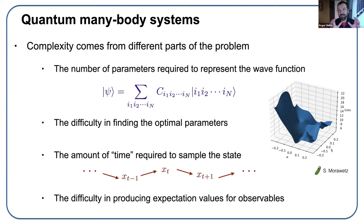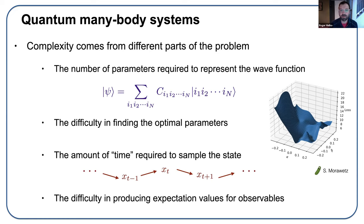As you look at different methods, the complexity manifests in different ways — different parts of the problem give you the exponential wall. If we're lucky, we'll find Hamiltonians or wave functions that can be classified in a way that allows us to devise algorithms bypassing this exponential difficulty, like one-dimensional DMRG. But in some cases, we just shuffle that exponential wall around.